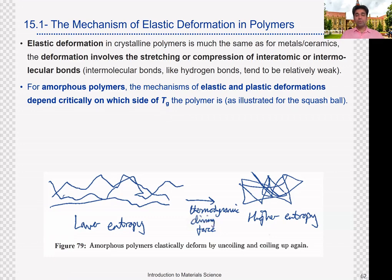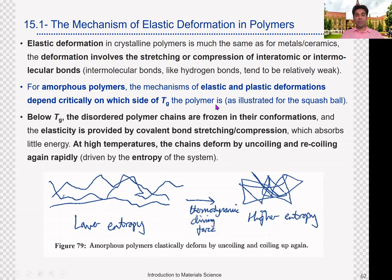Below Tg, materials behave like brittle materials. Above Tg, they behave like rubbery materials. If you want rigid or brittle properties, you must ensure the amorphous polymer is used below its Tg value. Below Tg, the disordered polymer chains are frozen into their conformations — they cannot move freely. When a force is applied, the covalent bonds can restrict, compress, and absorb energy. At high temperatures, the chains deform by uncoiling and recoiling rapidly. Please add the diagram into your lecture notes as figure 79.